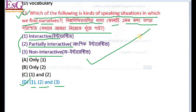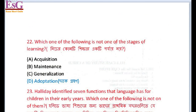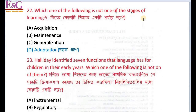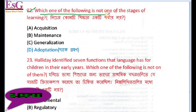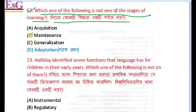This is the right answer. Which one of the following is NOT one of the stages of learning? The options are: Acquisition, Maintenance, Generalization, and Adoption. Adoption is the right answer — it is not one of the stages of learning.